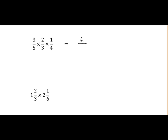Multiply the bottom numbers by each other. So it's 5 by 3 is 15, 4 by 15 is 60. So we get an answer of 6 over 60.